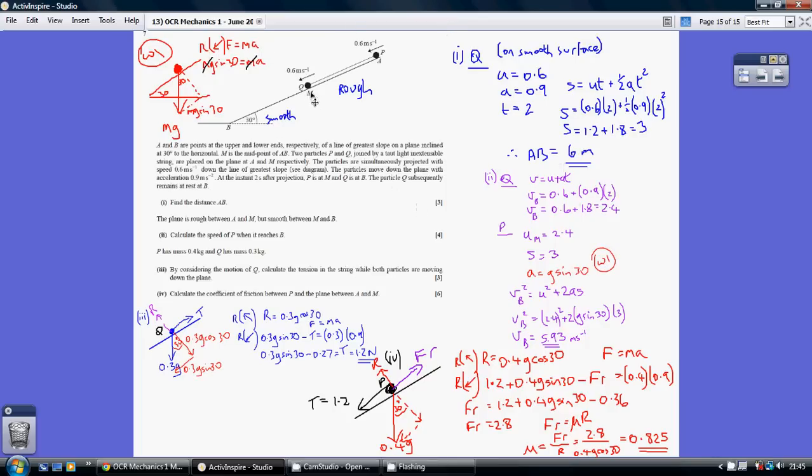Back to working out the speed of p at the bottom. Using v squared equals u squared plus 2as. I know u, I know s, I know a. Substituting in I can get the speed of p at b is 5.93.